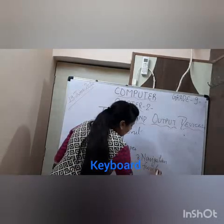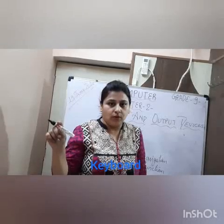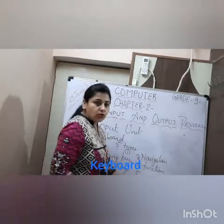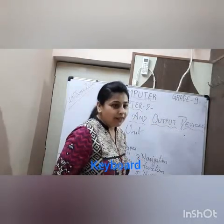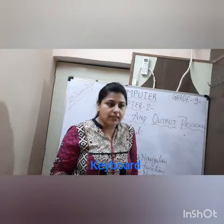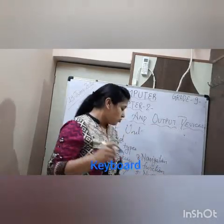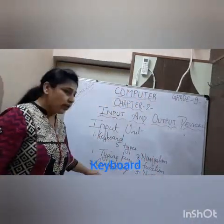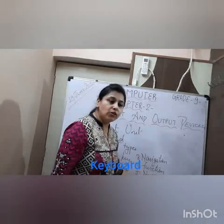The fourth type is function keys — special keys present on the top row of the keyboard, labeled F1 to F12. The fifth and last type is numeric keys, also called the numeric pad. It consists of keys from 0 to 9, arithmetic operators, and a decimal point, placed on the right side of the keyboard to help you type numbers quickly. So the five types of keys are: typing, control, navigation, function, and numeric keys.